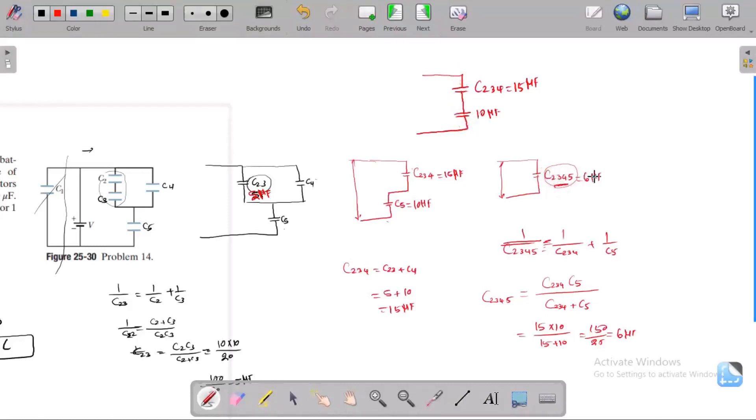We need to find the charge for this combination. Q2345 equals, using C equals Q by V, the capacitance of 2345 times the voltage. Here voltage is applied 10 volts. For C2345, 6 times 10, we get 60 microcoulombs. This is the charge, and for series components, Q5 is 60 microcoulombs, Q234 is 60 microcoulombs.